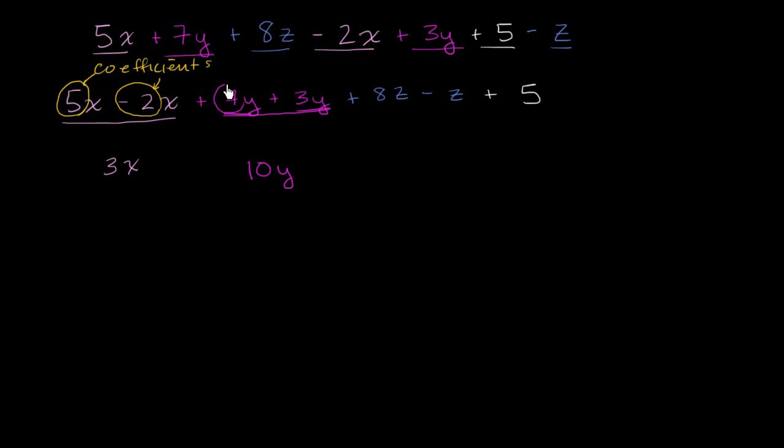Once again, you could say the coefficient on 7y is 7, the coefficient on 3y is 3. We added the coefficients, 7 plus 3, to get 10y.